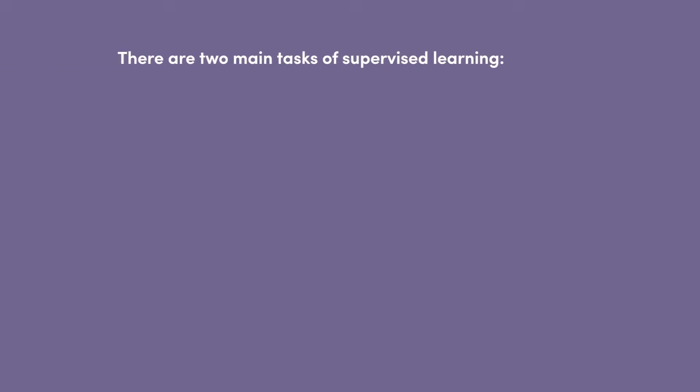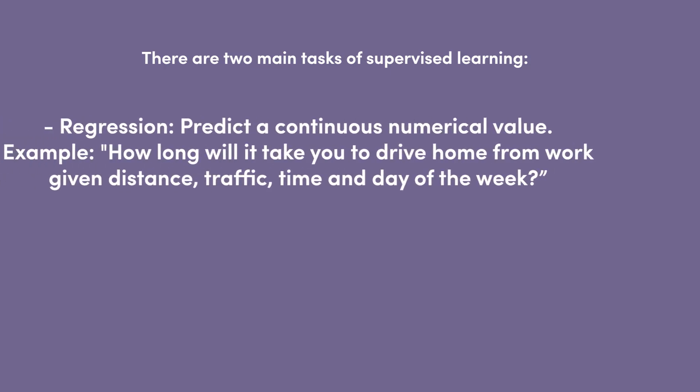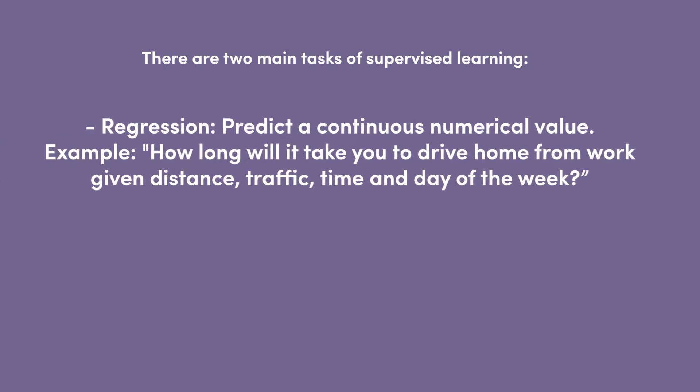Supervised learning makes use of a known relationship between input and output — this is where labeled data comes into play. The goal of the algorithm is to learn from correct answers in the training data and use those insights to make predictions when given new input data. There are two main tasks of supervised learning. The first is regression, which consists of predicting a continuous numerical value — for example, how long will it take you to drive home from work, given distance, traffic, time, and day of the week.